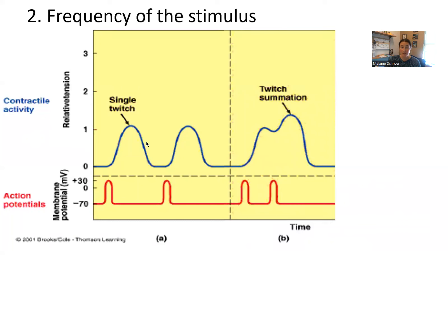If you stimulate this muscle cell before it fully has a chance to relax — that is, before all the calcium is back, before all the cross bridges stop — what happens is that here's the shortening of the sarcomere, but before relaxation takes place, here's another stimulus, and the cell is stimulated again. Once again, more calcium is released into the sarcoplasm, more cross bridges are able to form, and quickly, because it's still kind of activated from the last twitch.